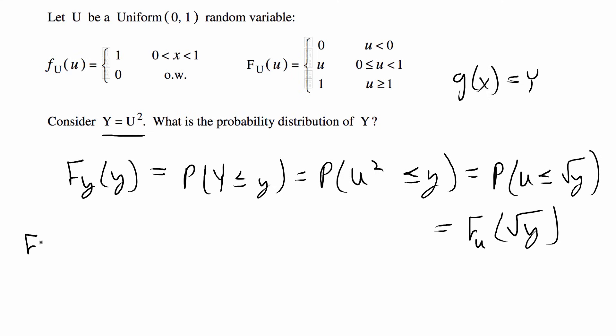Alright so I'm going to go ahead and do that. So F_Y(y) is equal to 0 and again we're going to plug in the square root of y for u and if we square that we still get y less than 0 for the range. For u we're going to plug in the square root of y and then this is going to be 1.